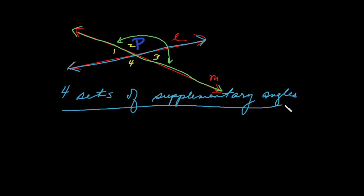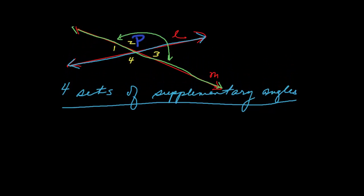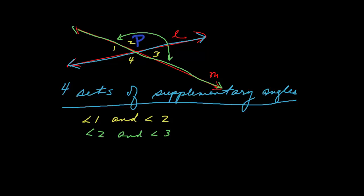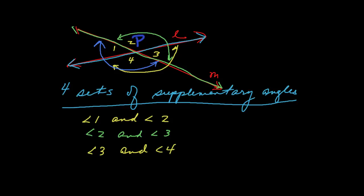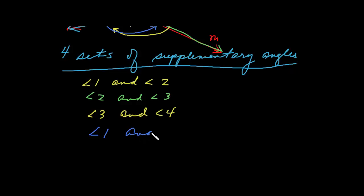What are those four sets? Angle 1 and angle 2 would be one set. Angle 2 and angle 3 is another. Angle 3 and angle 4. And finally, angle 1 and angle 4 are also supplementary. These are the four sets of supplementary pairs of angles, and the sum of their measures are all 180 — that's what it means to be supplementary.